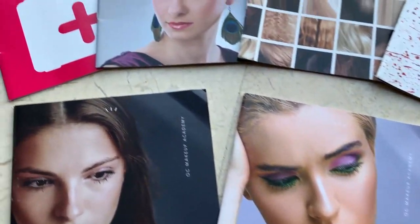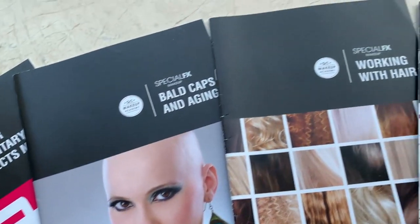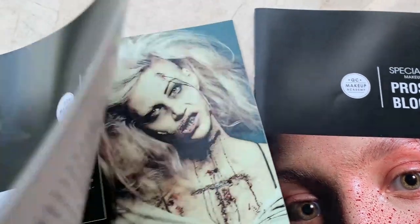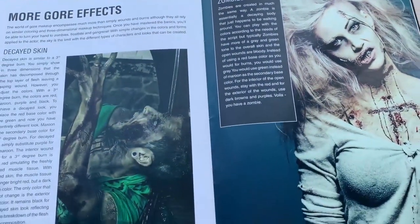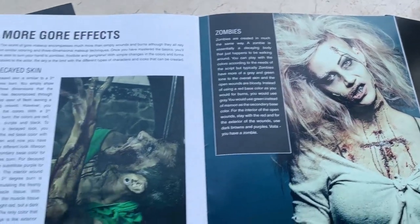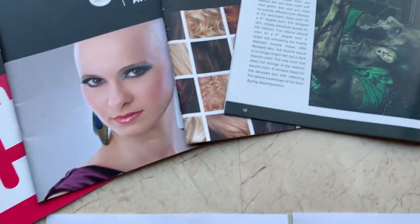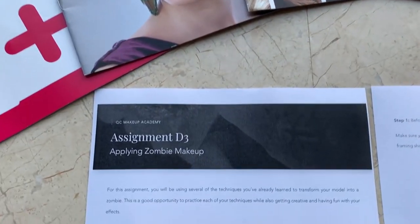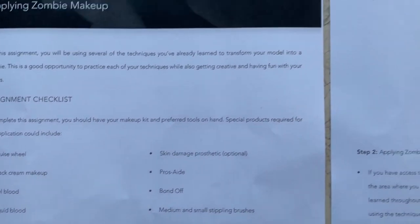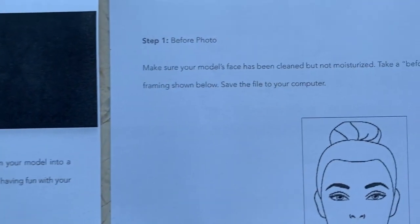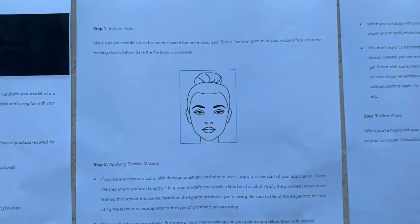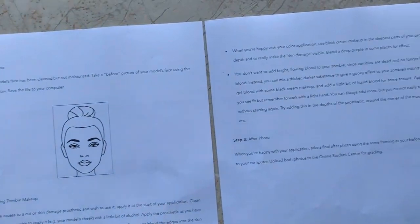Applying zombie makeup is the final practical assignment in QC Makeup Academy's SFX course for unit D. My first steps are always to read the textbooks, which are very detailed, illustrative and informative. There is an assignment template that contains all the important information needed to create a zombie. For this assignment I had to use several techniques learned from previous units to transform my model into a zombie. This was a great opportunity to practice each technique while getting creative and having fun with all the effects.